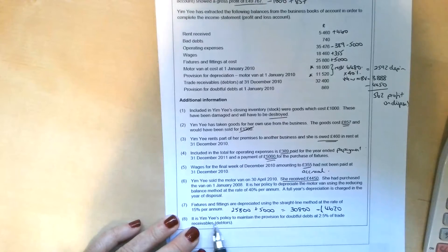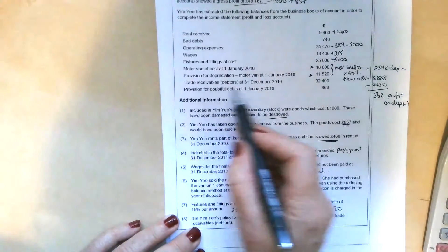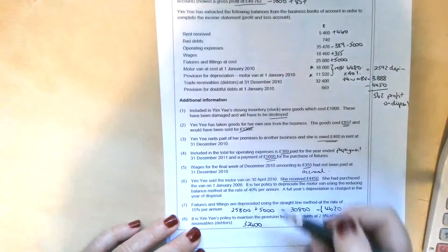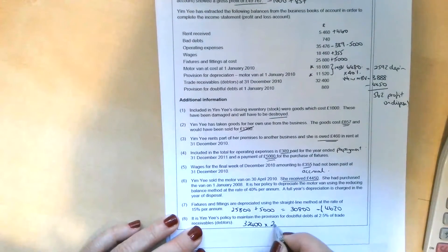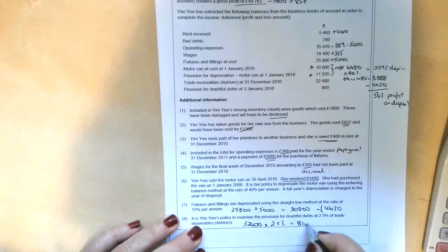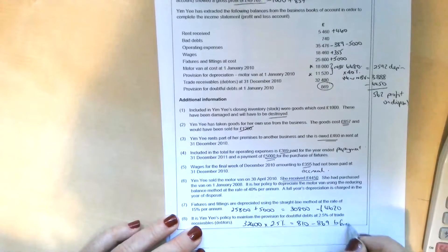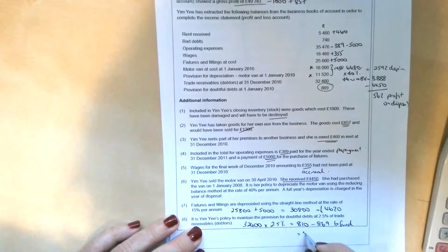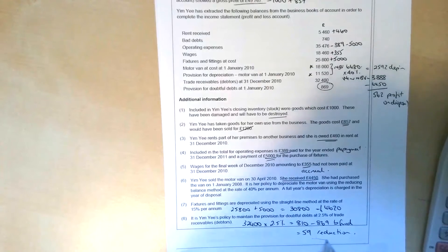The final piece of additional information is that it's Yim Yi's policy to maintain the provision for doubtful debts at 2.5% of trade receivables. Well, the trade receivables are £32,400. We've not been told about any irrecoverable debts that we need to write off. So there's nothing we need to do with that figure other than multiply it by 2.5% and find out what the total provision for doubtful debts needs to be at the end of the year. So 2.5% is £810. But we've already got £869 brought forward from the previous year. So if we take that away, we've actually got to reduce the provision for doubtful debts by £59. So in the other income, we've got the rent received, the profit on disposal of the non-current asset, and a £59 reduction in the provision for doubtful debts.